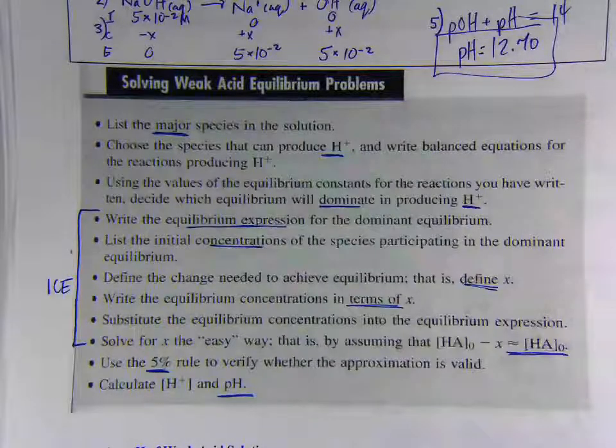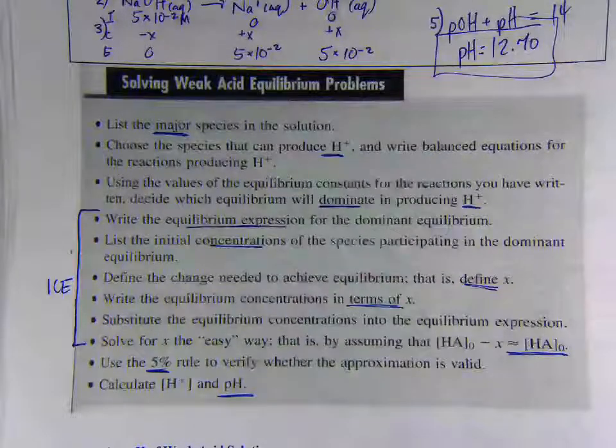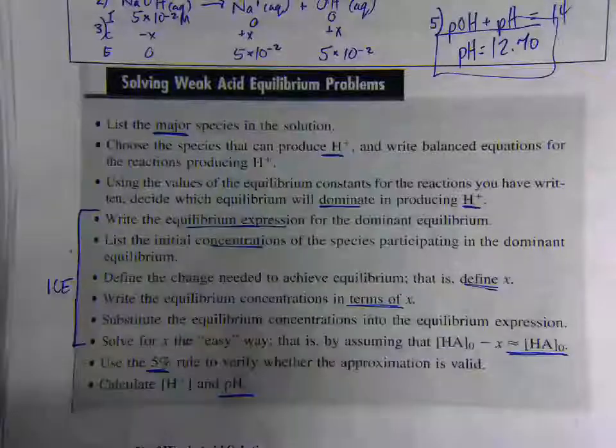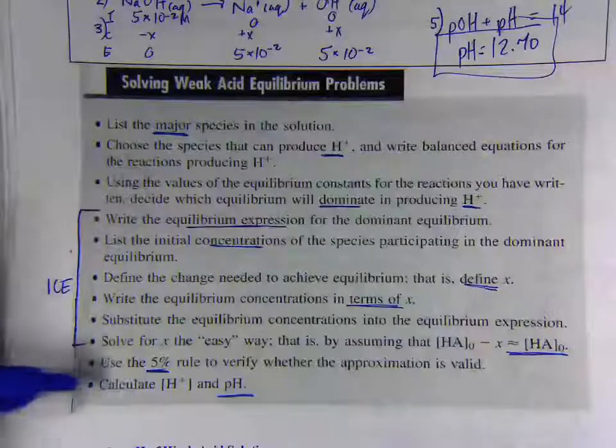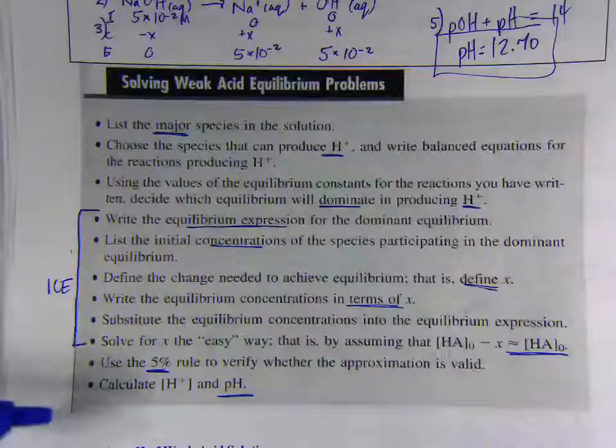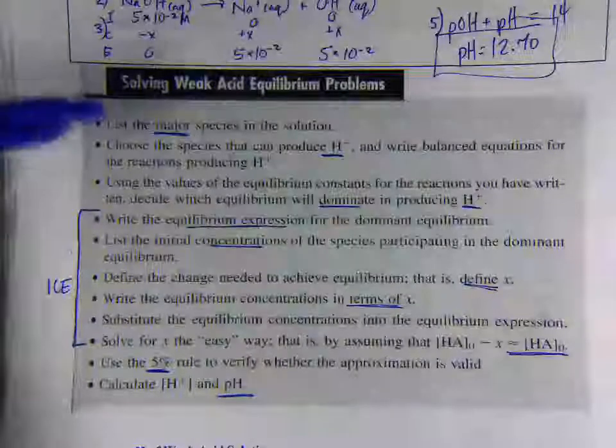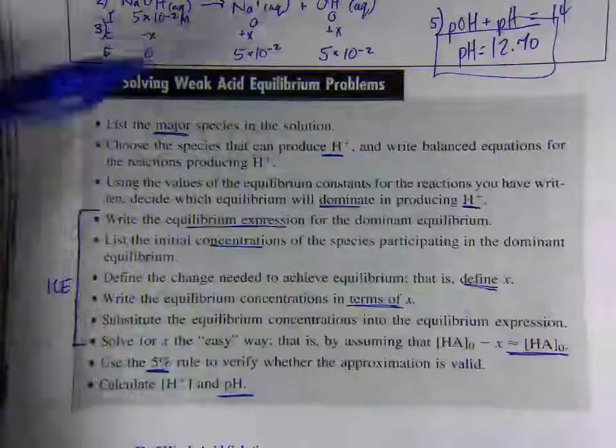What we're doing in this set of the notes is solving weak acid equilibrium problems. So far we've only done strong acids and strong bases. It's just doing ice tables and equilibrium stuff like we did from chapter 13. There's just a couple of extra steps added on to the beginning and the end when we're dealing with acids and bases.